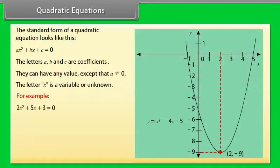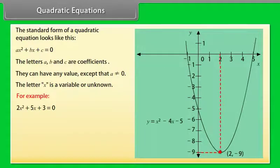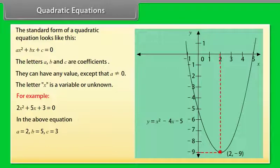Let's take an example: 2X squared plus 5X plus 3 is equal to 0. In the above equation, A is equal to 2, B is equal to 5, C is equal to 3.